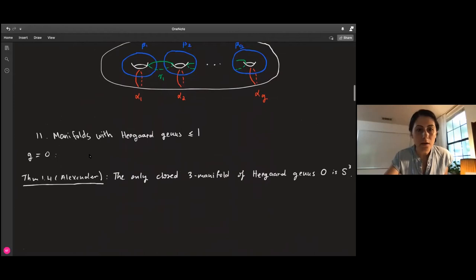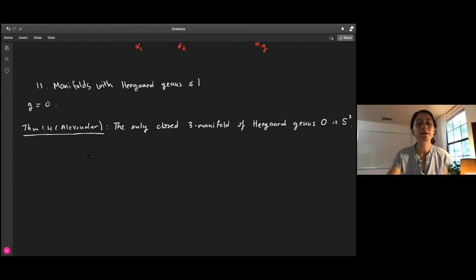We want to understand manifolds with small Heegaard genus. Let's look at the first case when genus is zero. We already showed that if we take two three-balls, we obtain a three-sphere. With Alexander's trick, we'll see this is the only manifold we can get.